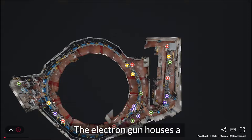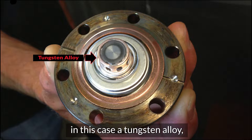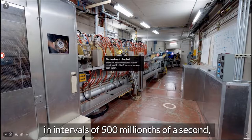The electron gun houses a high melting point metal, in this case a tungsten alloy, which is heated up to a thousand degrees Celsius so that its electrons boil off. A strong positive charge occurs in intervals of five hundred millionths of a second, which causes the electrons to fly towards the buncher in bunches.